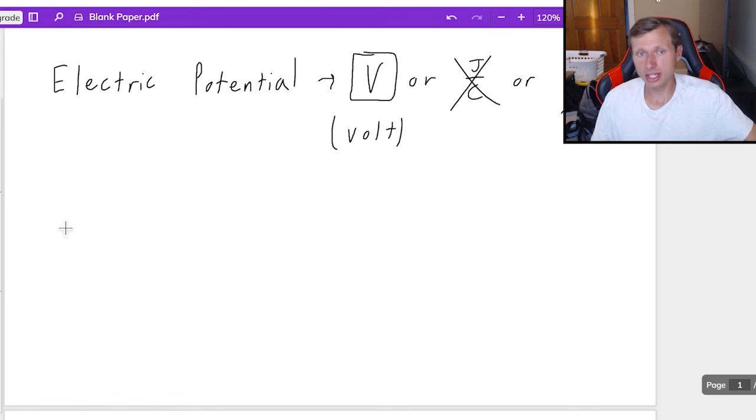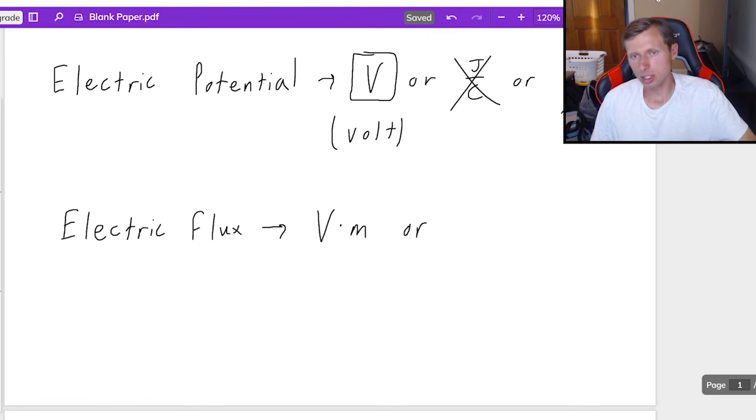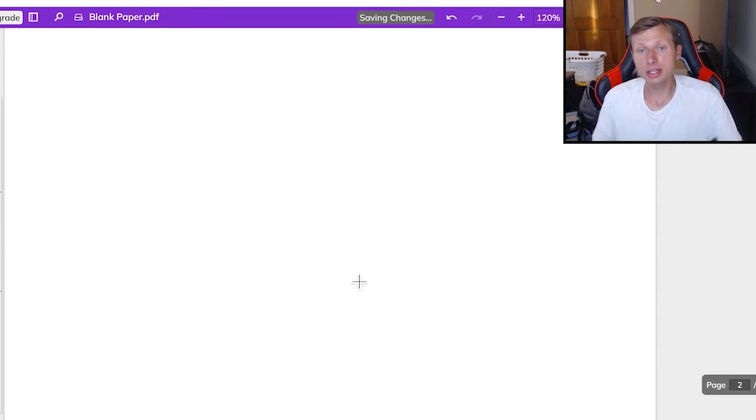And then the last quantity in this unit is electric flux. And electric flux has units of volts times meters. Or you could also call it the newton times meters squared divided by coulombs. But I really would not recommend doing that because the volt times meters is the preferred unit.